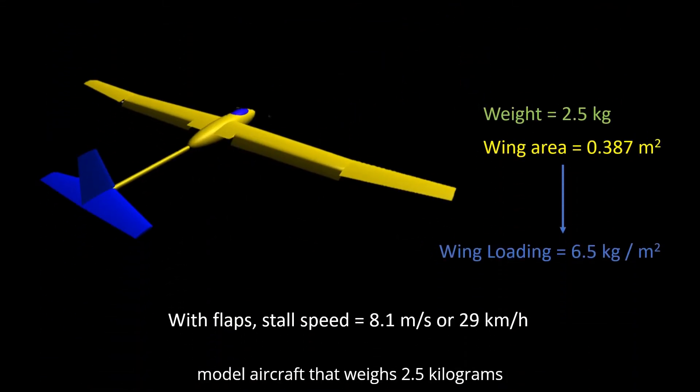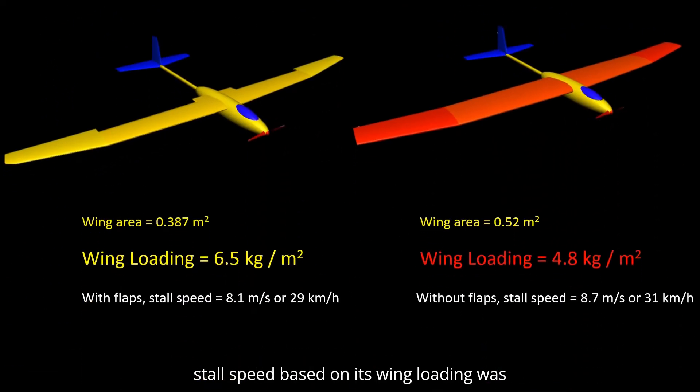Consider a model aircraft that weighs 2.5 kilograms and has a wing area of 0.387 square meters. This means that its wing loading is 2.5 divided by 0.387, or around 6.5 kilograms per square meter. Now, this plane has flaps and will stall at around 8.1 meters per second or 29 kilometers per hour. The way to calculate the model's stall speed based on its wing loading was discussed in the last video.